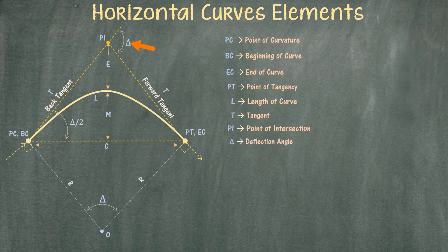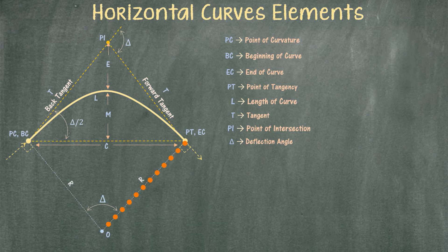The name of this angle is called the deflection angle. This deflection angle is formed if you start at the back tangent and turn clockwise until you hit the forward tangent. If we draw a line from the beginning of the curve to the center of the circle forming the arc, and then do the same from the end of the curve, the angle between both lines intersecting at the center of the circle will also be called the deflection angle. These two angles are the same.